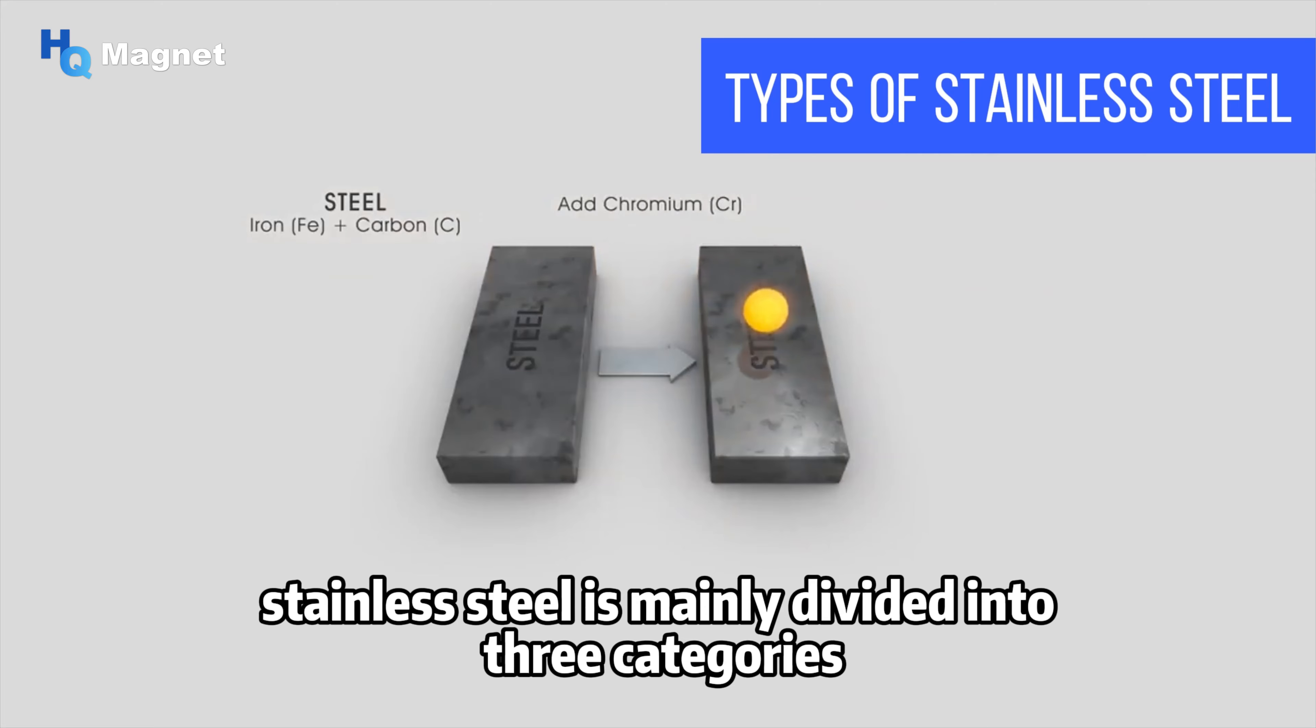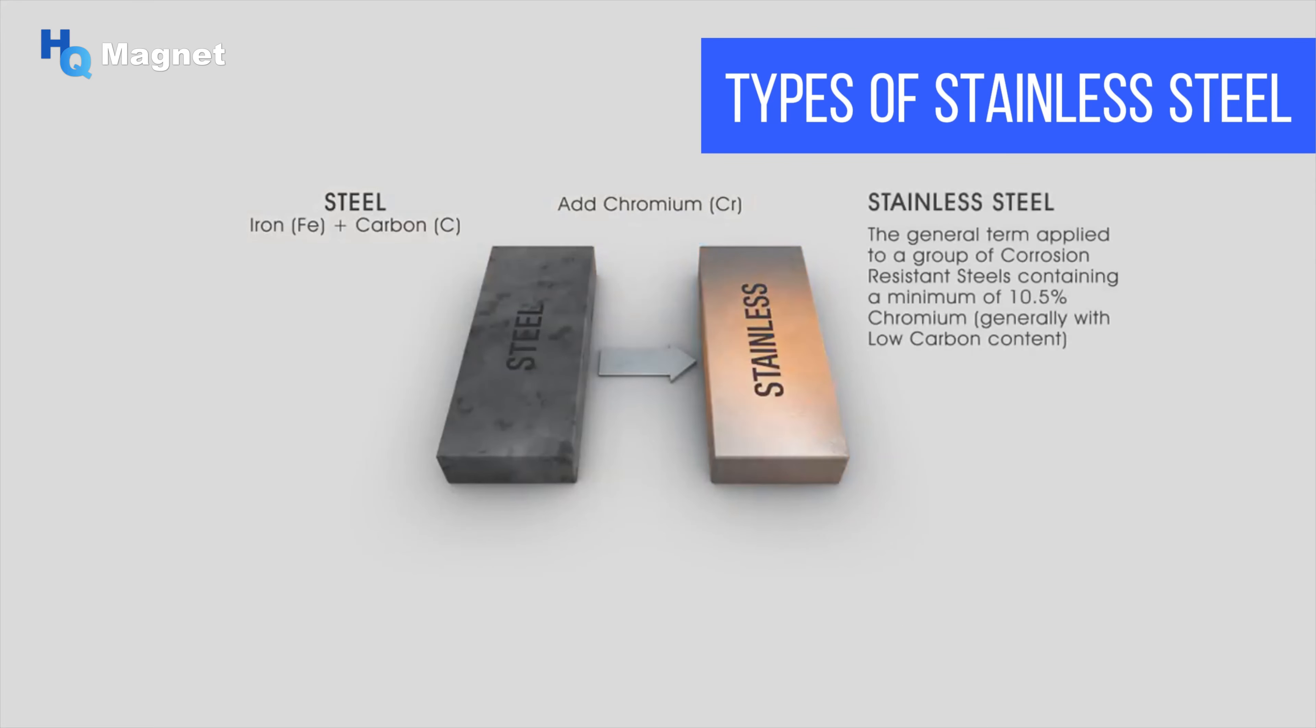Stainless steel is mainly divided into three categories. These different types of stainless steel exhibit different magnetic properties and physical characteristics due to their internal element content and crystal structure.